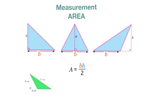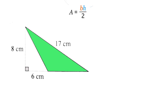The area of all of these triangles can be found by one formula: the area is equal to the base times the height divided by two. In working out this particular triangle, we need the height, which is here 8 centimeters, and we also need the base. The base is right here and we do not have that.